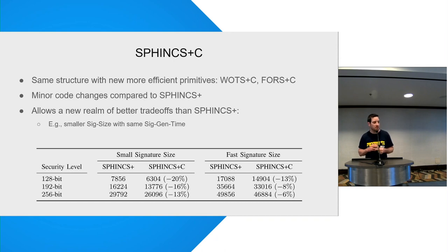For example, if we want to have the same signature generation time, but much smaller signature, we can reduce up to 20 percent of the size of the signature. For example, we have from 7,800 bytes to about 6,300, which is still big, but much smaller than we could have before.